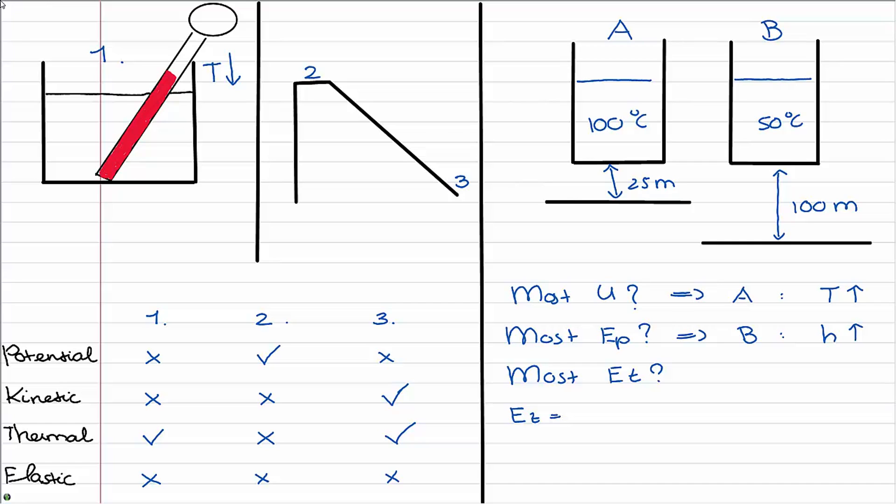And for the internal energy I can write the mass times Cp times delta T, and for the potential energy I can write the mass times the height times the gravitational constant. If I now fill this in for A and B they both have the same mass, they both have the same Cp.